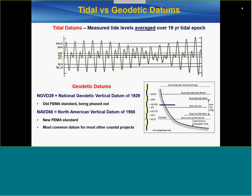Those tidal datums have the annoying property of changing with sea level rise, so over time they tend to drift upward. In response, we also use geodetic datums — references tied to the Earth's geoid that are considered fixed once established. You will often see NGVD, the National Geodetic Vertical Datum, which is being phased out but still appears in legacy projects. Now you'll be looking at NAVD — the North American Vertical Datum of 1988 — the current standard that FEMA uses for flood insurance and the most common reference level for most coastal projects.